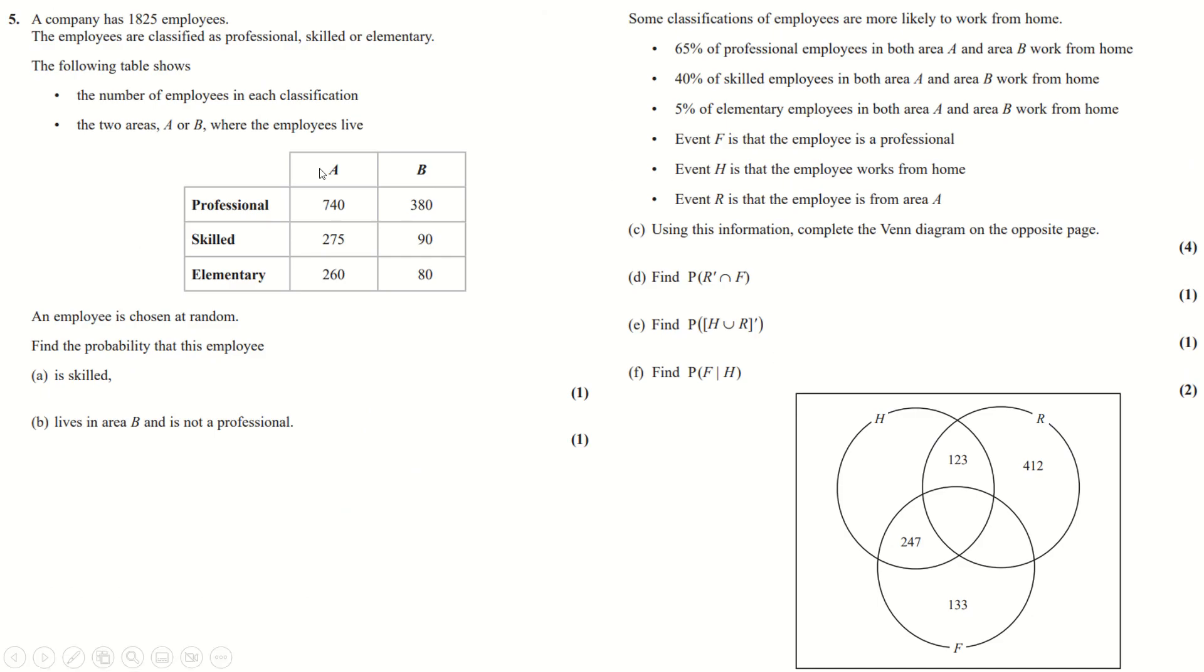This is the Venn diagram question. Skilled is just this plus this over the total. Lives in B and is not a professional, that's this plus this over the total. Next one, 65%, so what I did with a calculator is I read this and worked out 65% of each of those things and just wrote them down in red. And then I worked out 40% of each of those things and then I worked out 5% of each of those things.